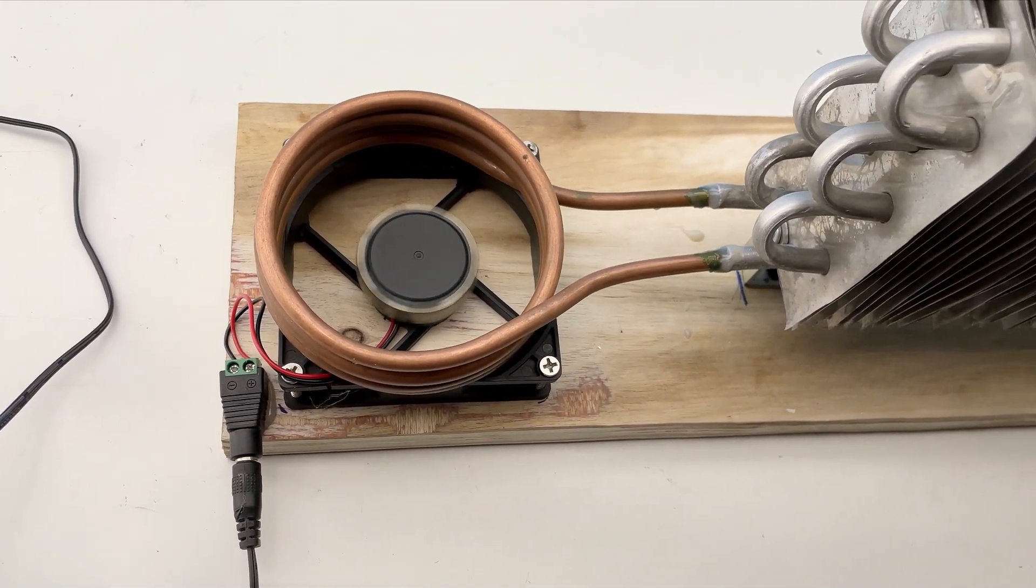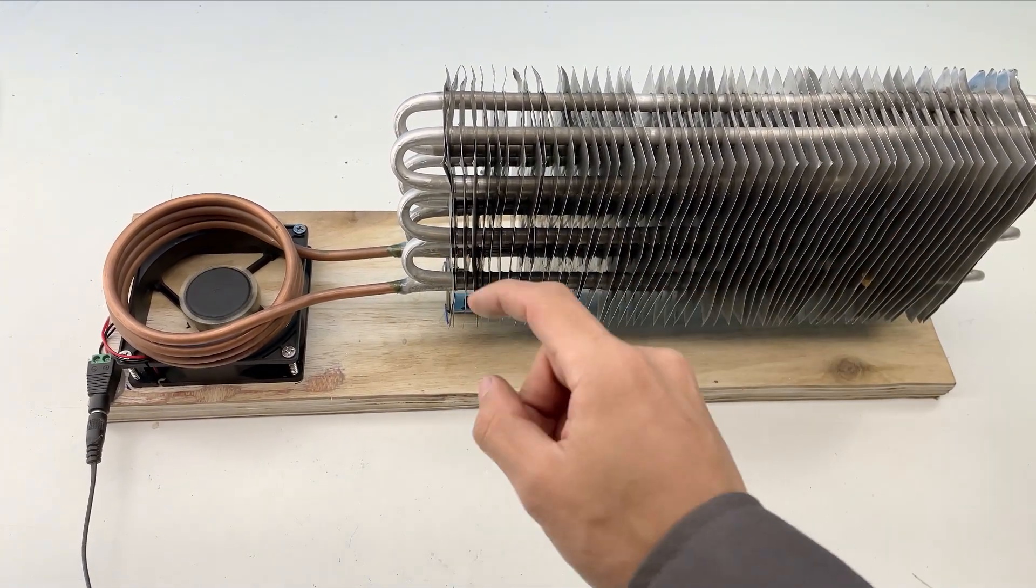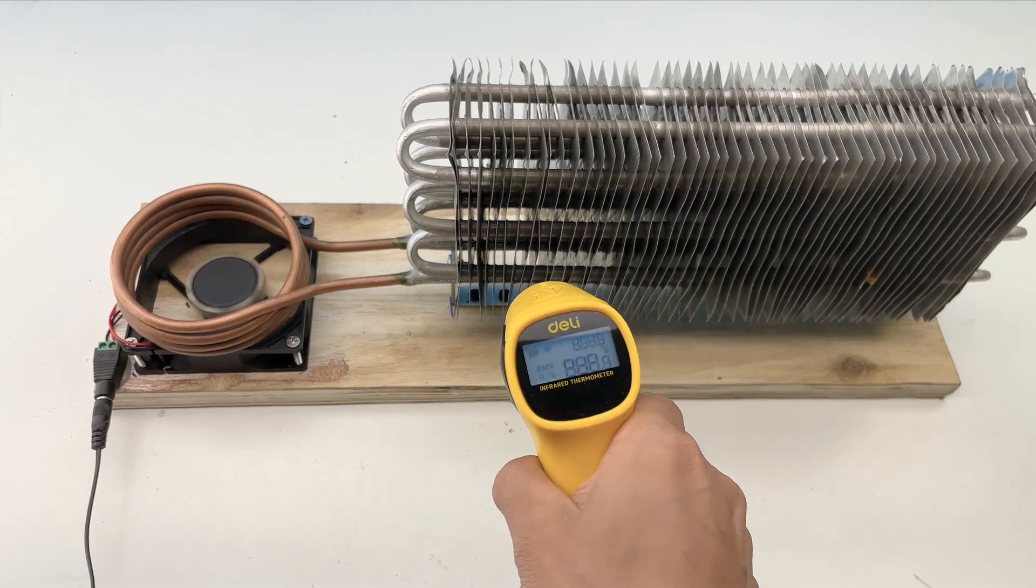With no fan blades left to dissipate heat, the temperature builds up and transfers through the copper tube into the evaporator, spreading outward just like a mini electric heater.